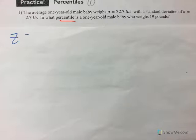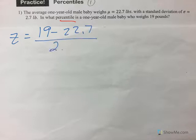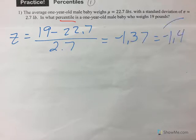The z-score is the value minus the mean divided by the standard deviation. When I do that, I get negative 1.37. But if I look at my probability z-score paper, the closest one to that is negative 1.4.